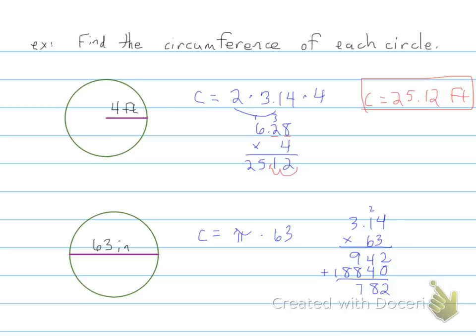2, 8, 17, 9, and 1. And again don't forget those decimal places. So 1, 2. So our circumference of this circle is 197.82 inches.